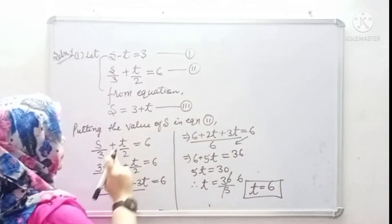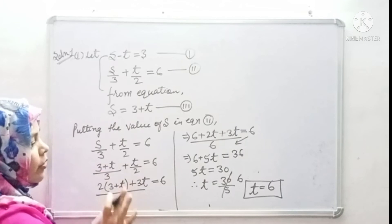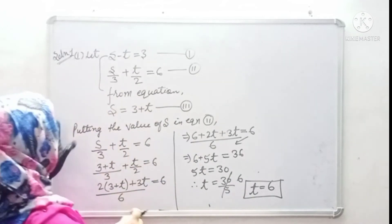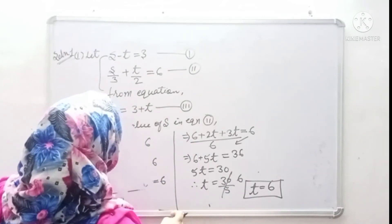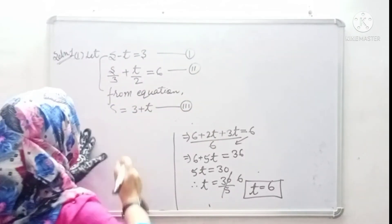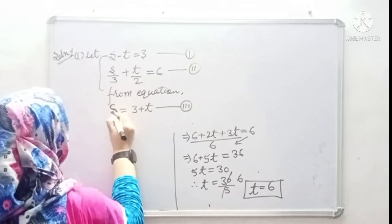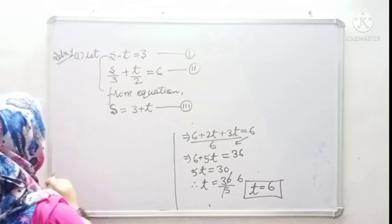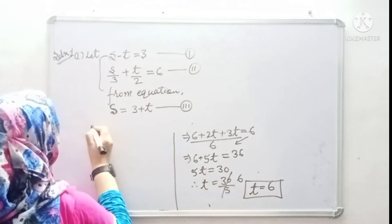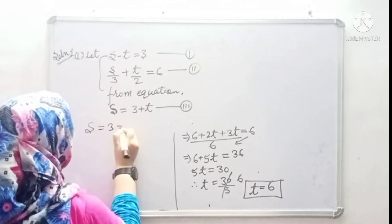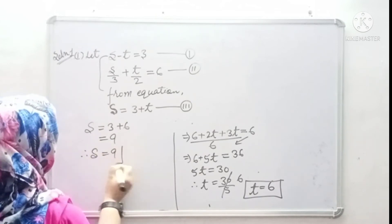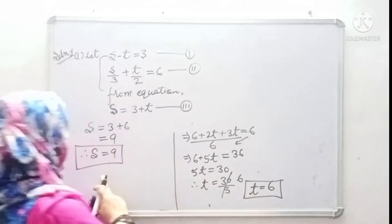Now we will put the value of t in equation 3 to find s. S equals to 3 plus t, and t equals to 6, so s equals to 3 plus 6 equals to 9. You can note: s equals to 9 and t equals to 6.